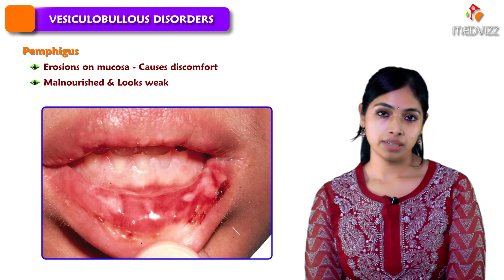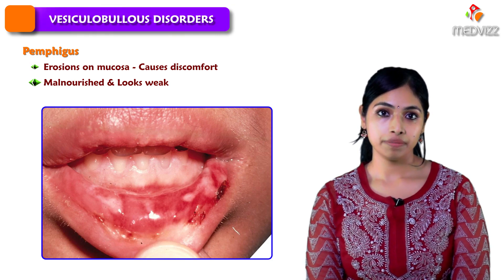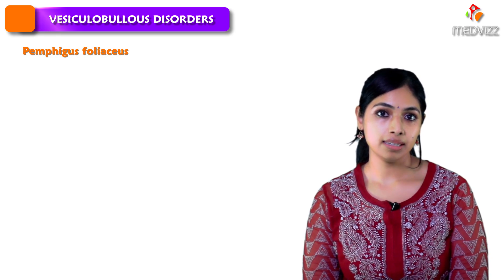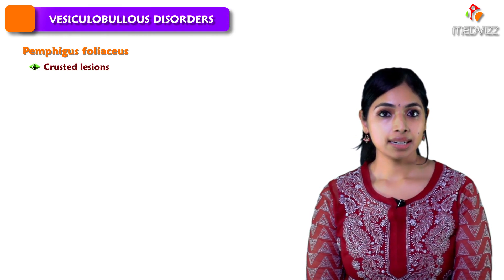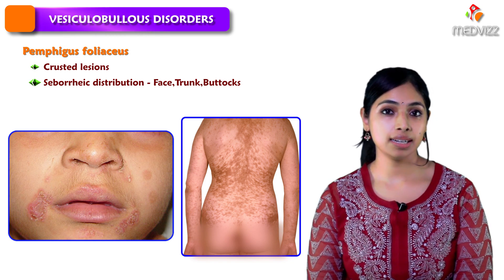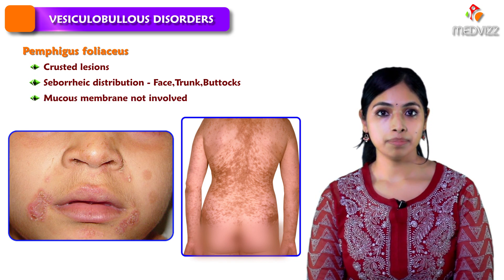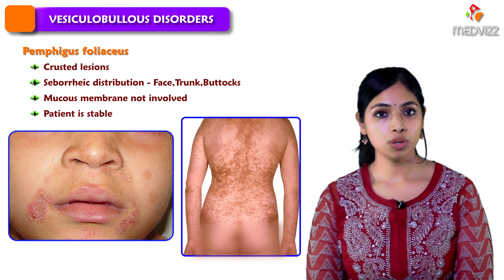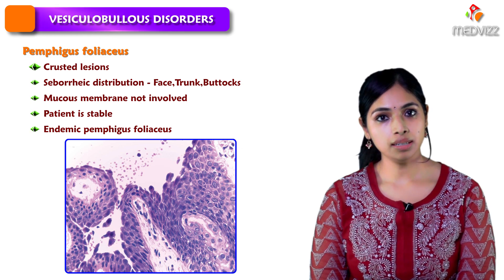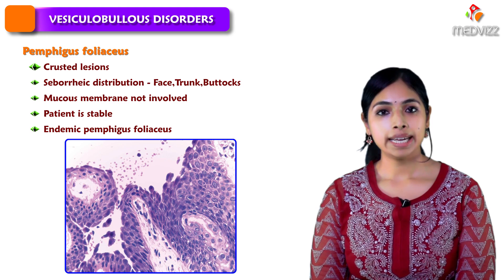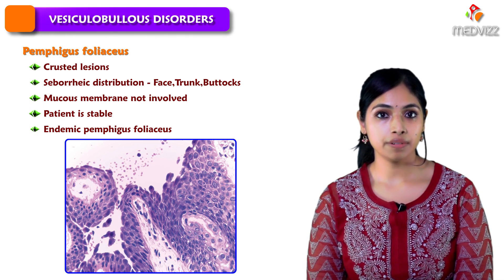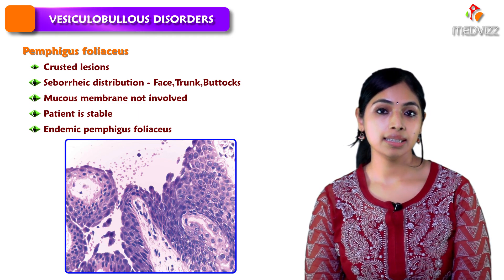The next variant of Pemphigus is Pemphigus foliaceous. Instead of flaccid blisters as in Pemphigus vulgaris, we see more crusted lesions distributed in a seborrheic distribution — often on the face, trunk, and buttocks. The mucous membrane is not involved in Pemphigus foliaceous, and the general demeanor of the patient is often quite good. A variant known as endemic Pemphigus foliaceous is seen in Brazil, called Fogo Selvagem, which means 'wildfire' in Portuguese.